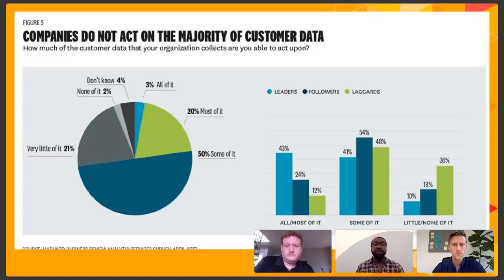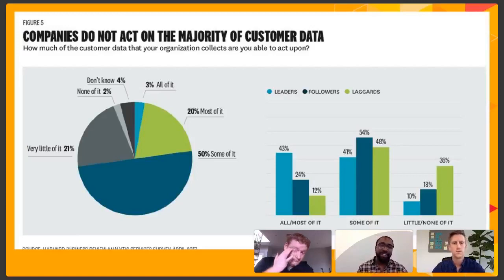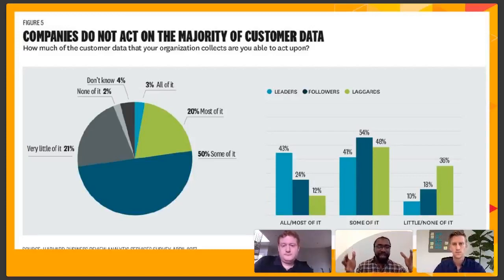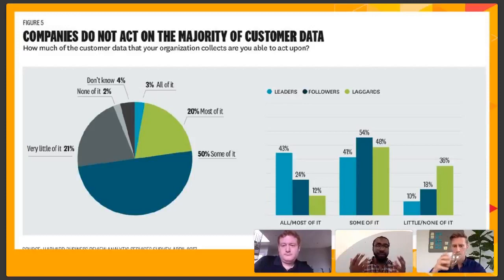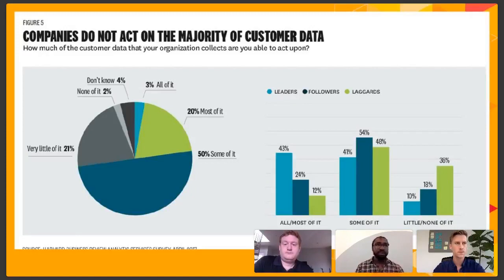Even though most business leaders view disruption as a positive way to initiate some form of change, they also recognize that doesn't happen unless you have access to data. We're really seeing the gap widen between the haves and have-nots in terms of organizations embracing data visibility, single sources of truth, and line of business users being able to run analytics and monitor and track performance in real time. All these things are super important — that's what's going to make the biggest difference within the next five years in terms of retaining and growing your market share.